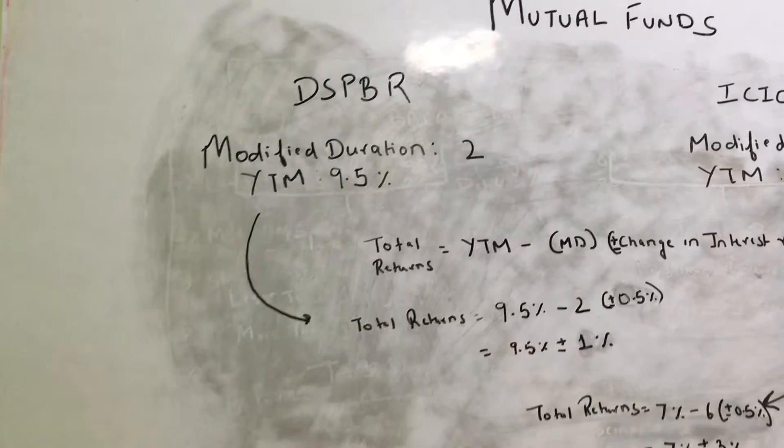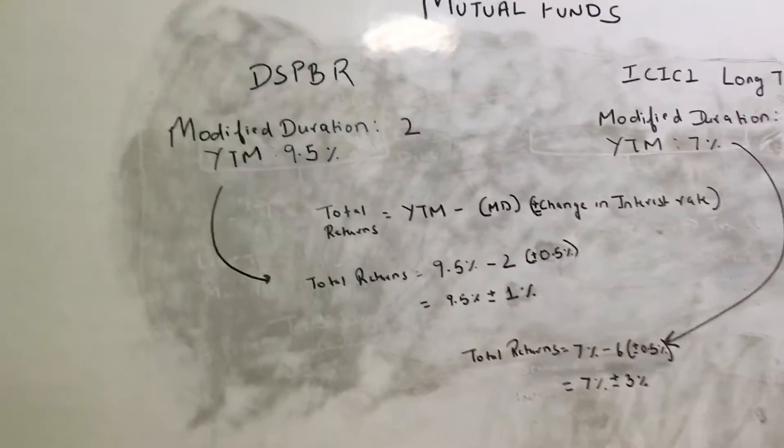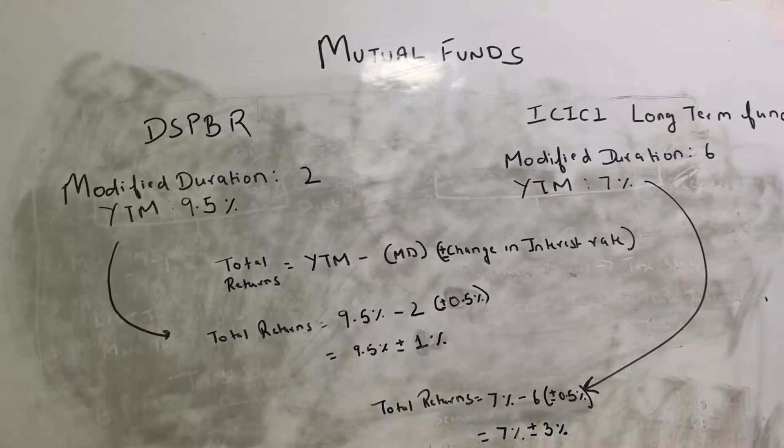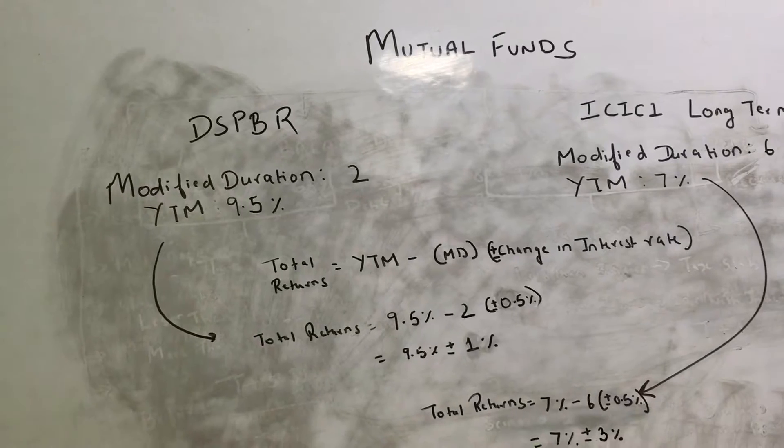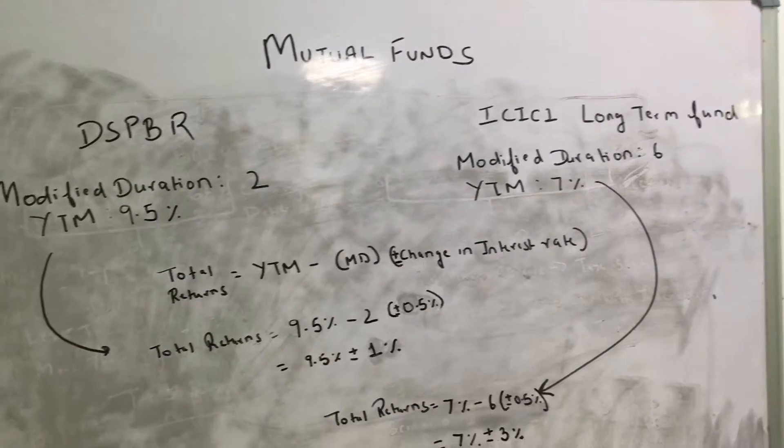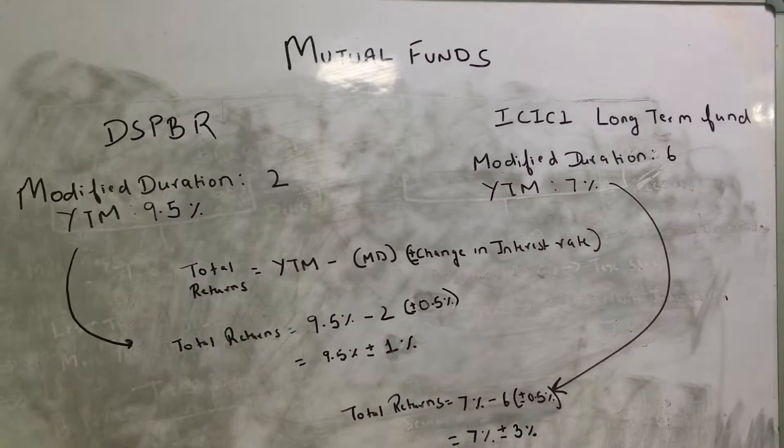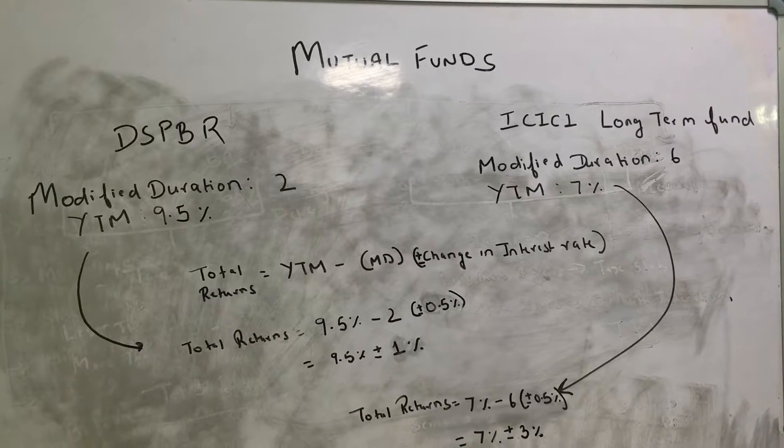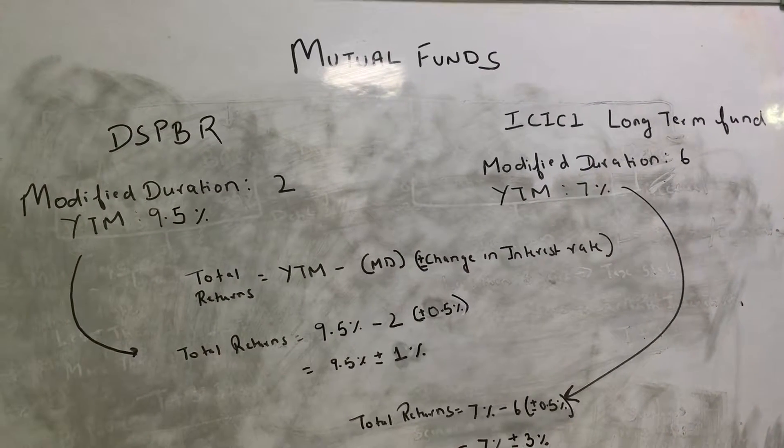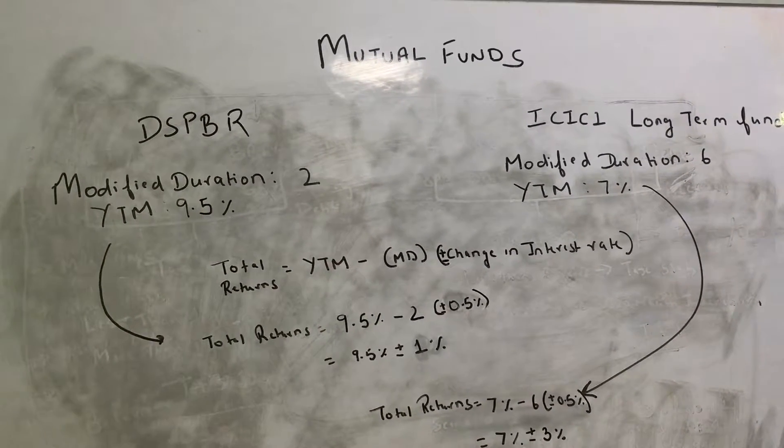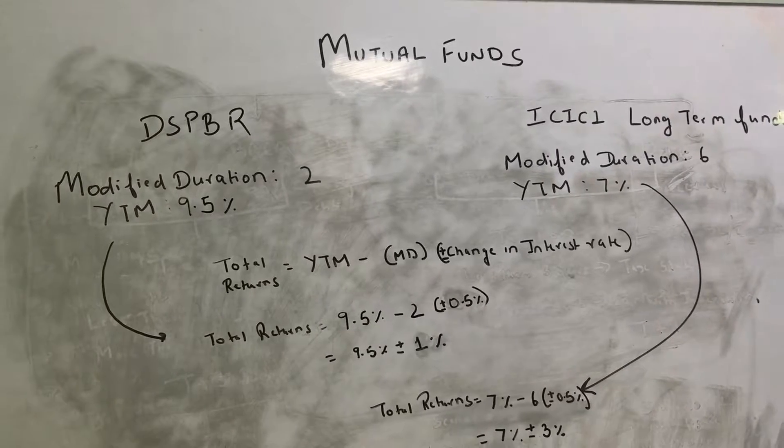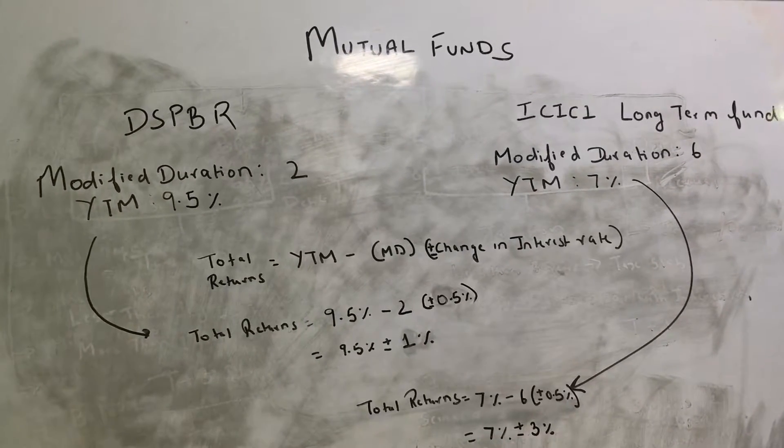Like we saw in our previous video, DSP BlackRock had a modified duration of 2 as the YTM was close to 9.5%. ICICI long term fund had a modified duration of 6 and YTM of 7%. I have taken for simplicity, I have removed the decimal points just for the sake of calculations.